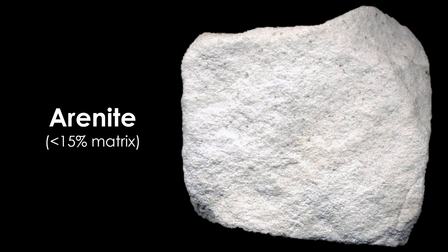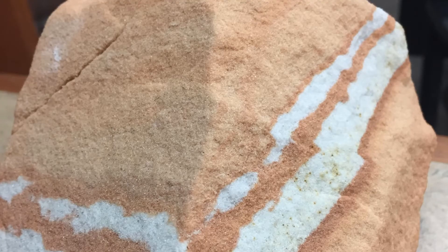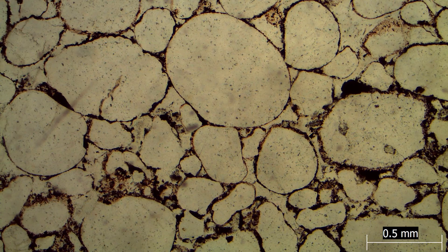If a sandstone mainly consists of clasts and contains very little matrix, then we call it an arenite. Arenites are your classic sandstones — they have the grainy look and feel of a sandstone. By the numbers, an arenite is less than 15 percent matrix, so under a microscope you usually find and see a lot of large clasts.